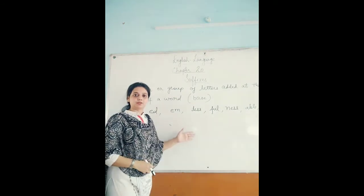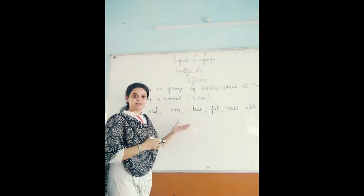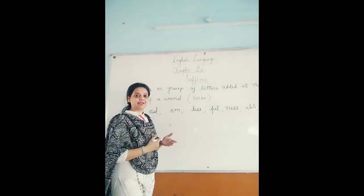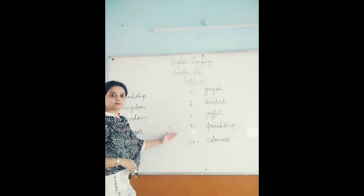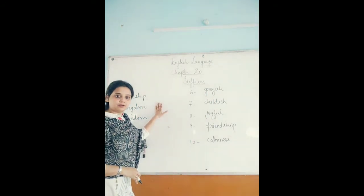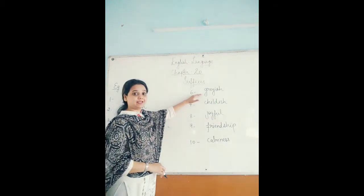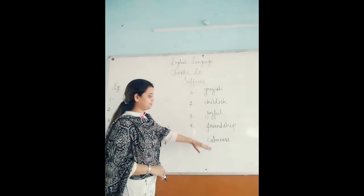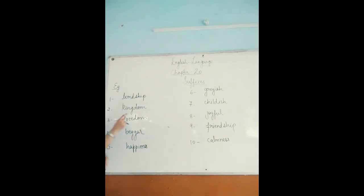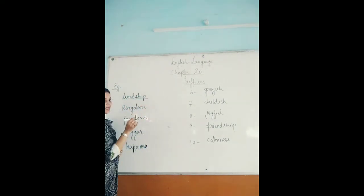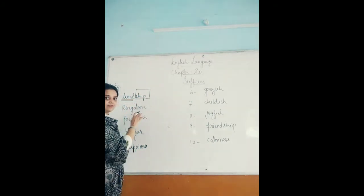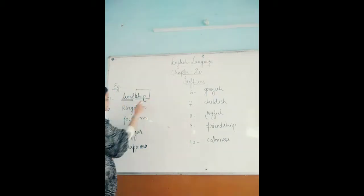Now we will see some words which have suffixes, and see the difference between the suffix and the base word. I have some words on the board and we have to identify where the suffix is and where the base word is. First word is lordship — the suffix is ship (s-h-i-p), and the base word is lord, which is itself meaningful.